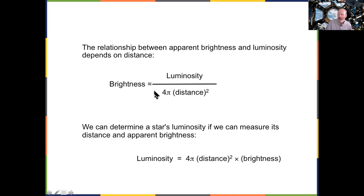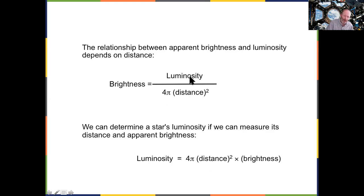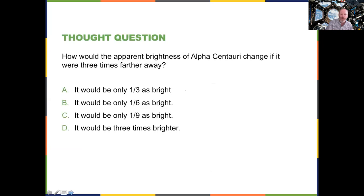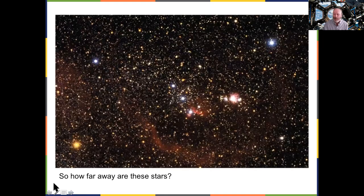The further away something is, you're dividing the luminosity by higher and higher numbers and the brightness goes down and down. You can rewrite this equation: if you know the distance and the brightness you can get the intrinsic luminosity; if you know the luminosity and the brightness you can get the distance. If you've got two out of the three, you can get the third. For example, if Alpha Centauri were three times farther away, it would be one-ninth as bright.